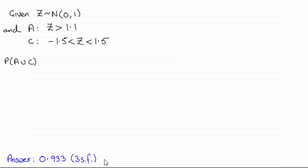So when it comes to the probability of A union C, remember this means the probability of A happening or C happening or both.